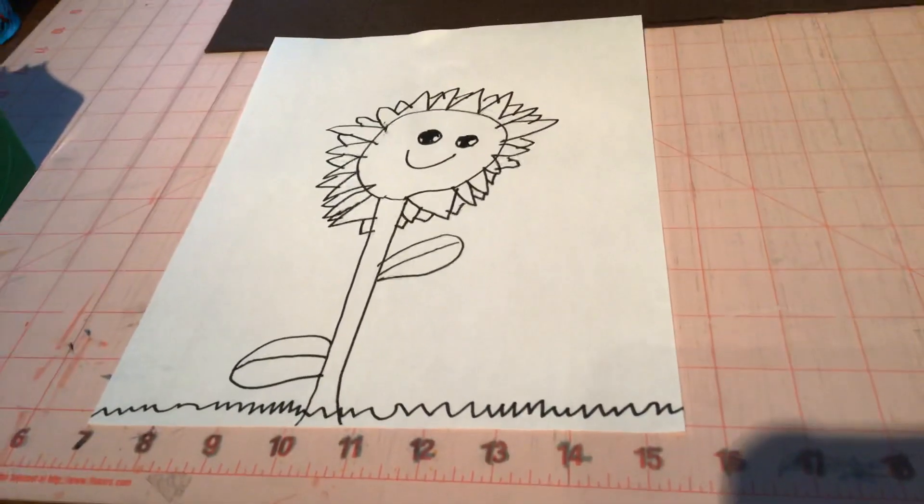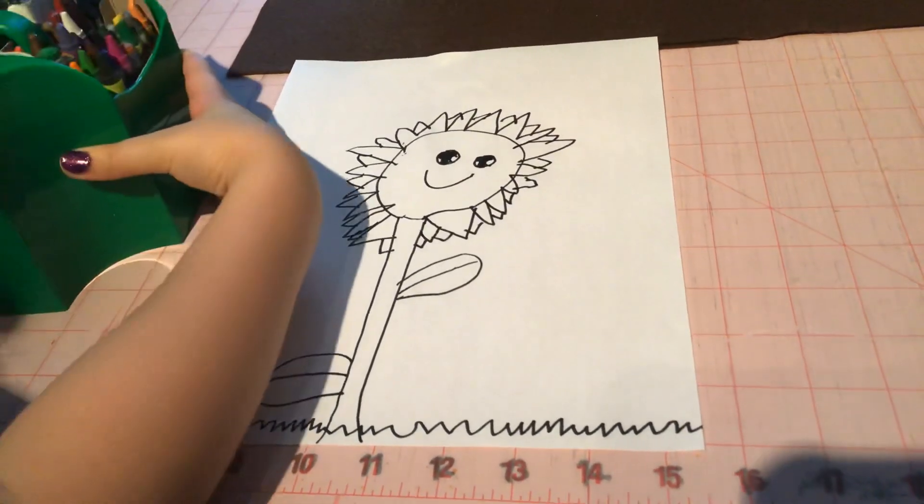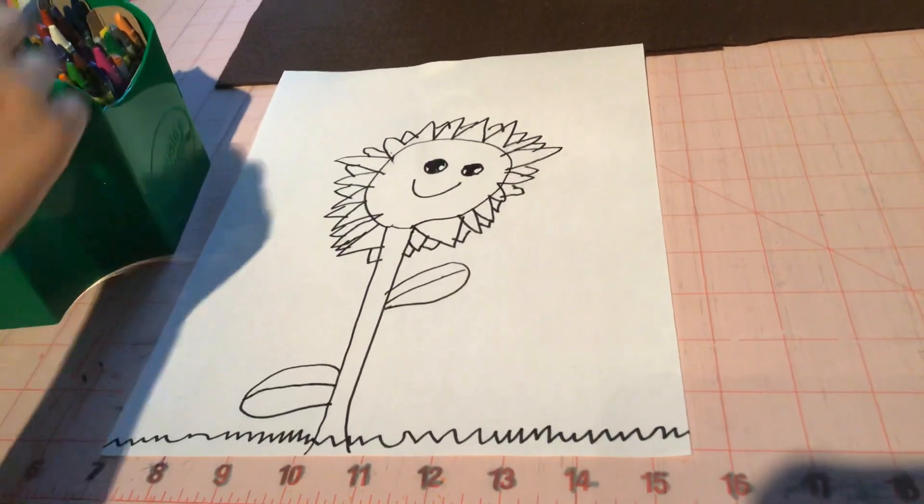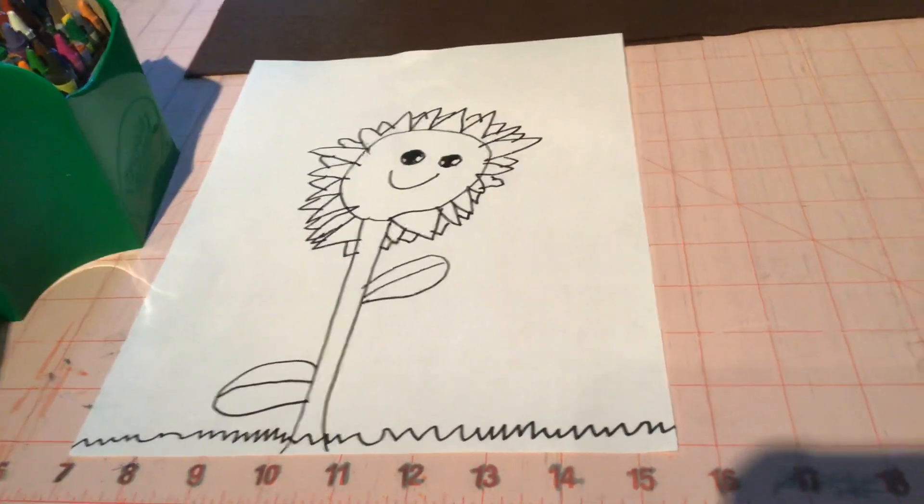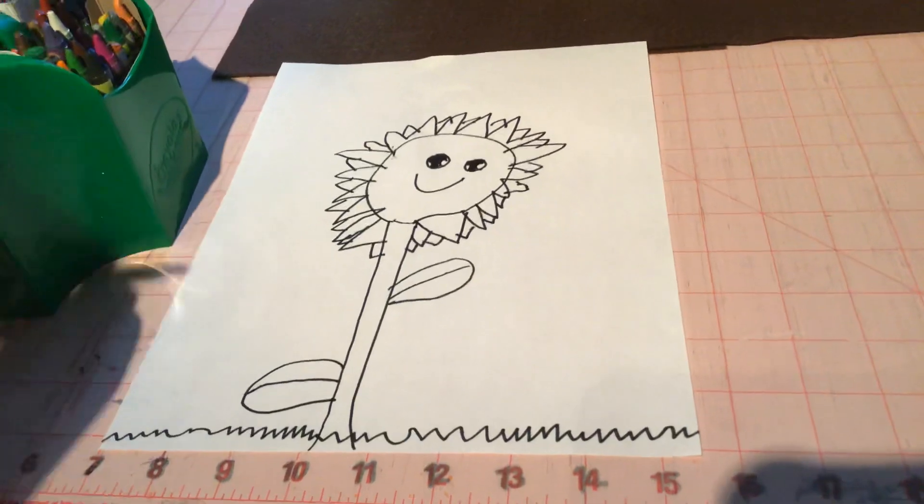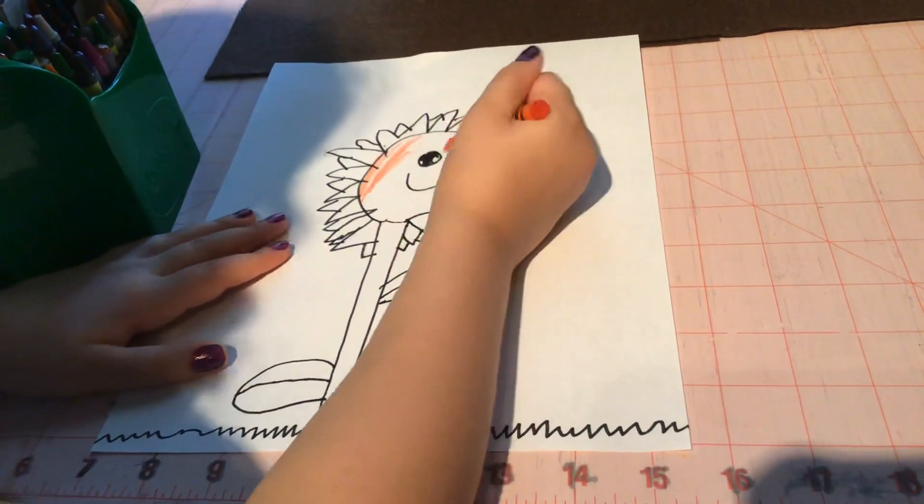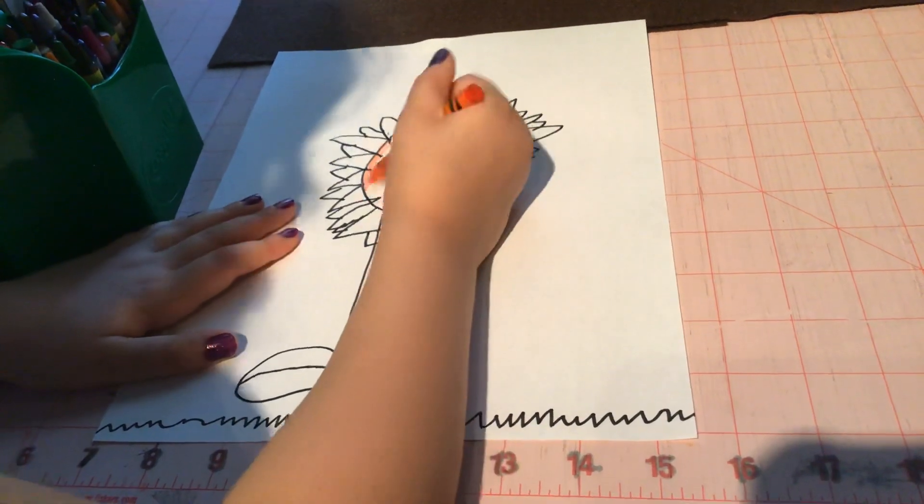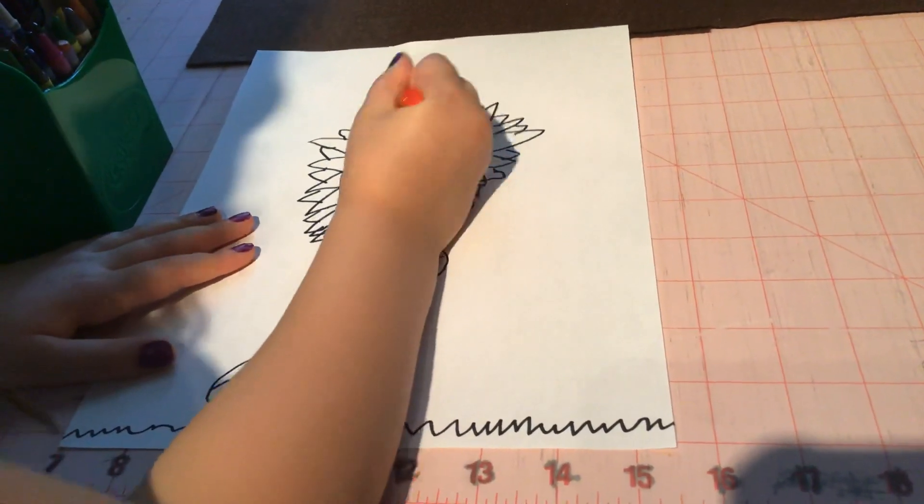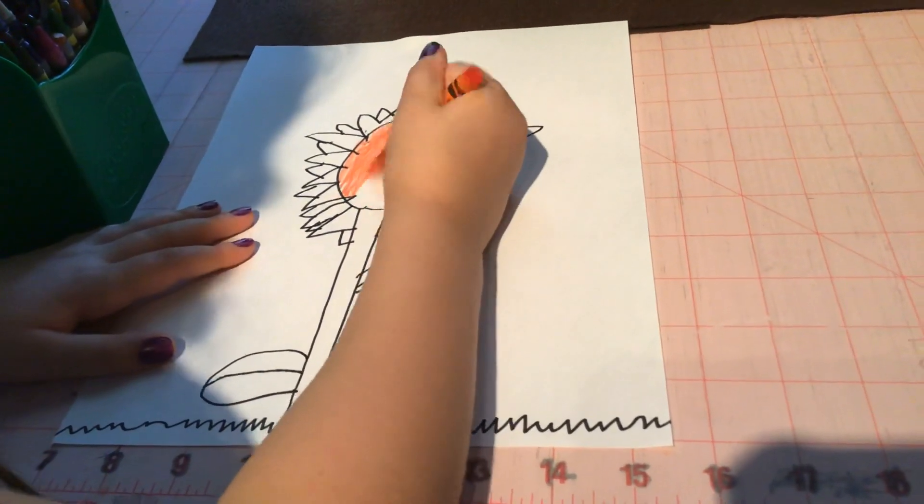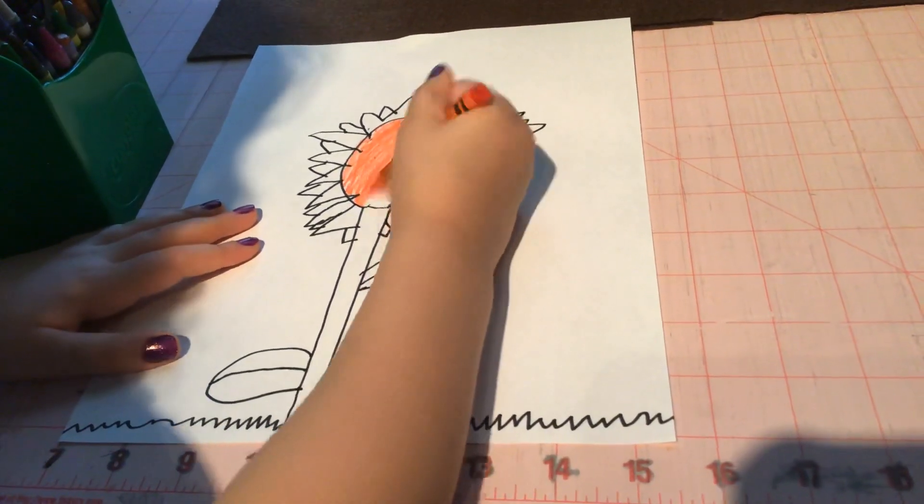And then we are gonna take our box of crayons. And for the middle we're gonna take like orange and color in. Try not to color in the eyes because we only want to color in the middle circle part of the sunflower.